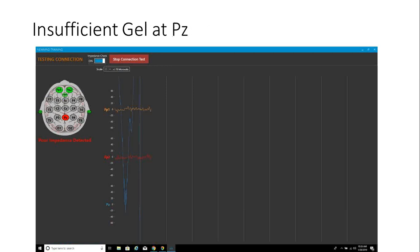Here's insufficient gel at PZ. You can see FP1 is looking pretty good, it's a clean line. FP2 is clean. But PZ, it's traveling all over the place, making wild swings. When you see things making wild swings like that, it's usually you don't have enough gel or paste.